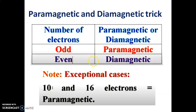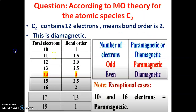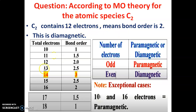Now applying this to C₂. Carbon has 6 electrons, so C₂ contains 6 + 6 = 12 electrons. So C₂ has 12 electrons.